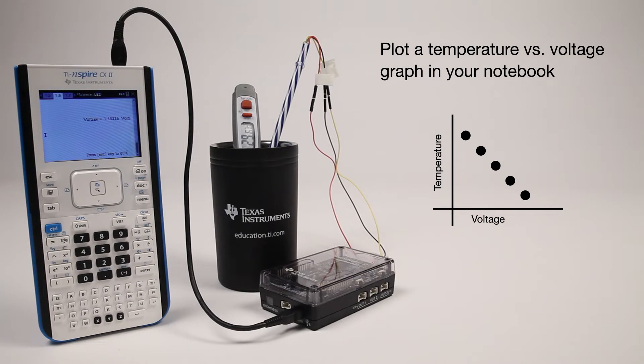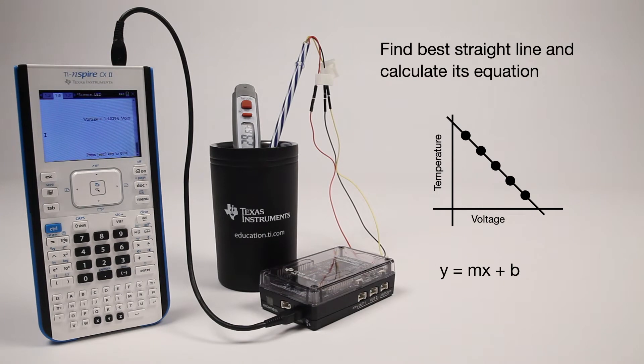You'll want to plot a temperature versus voltage graph in your notebook. The data should be linear. Next, find the best straight line through the data and calculate its equation in slope intercept form.